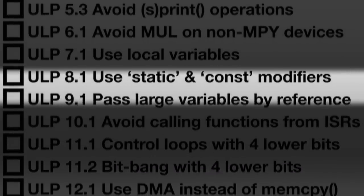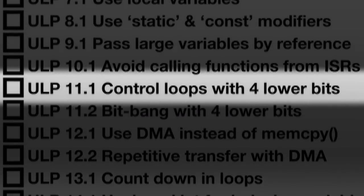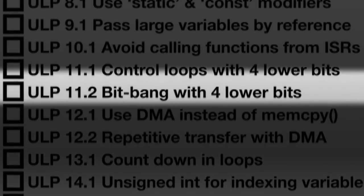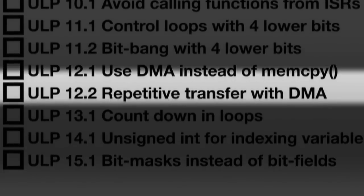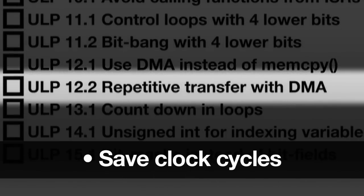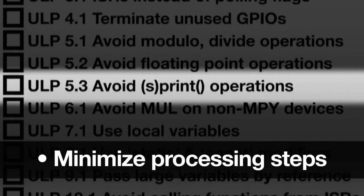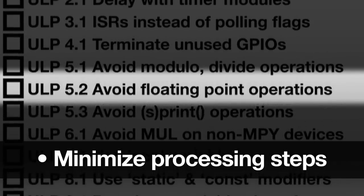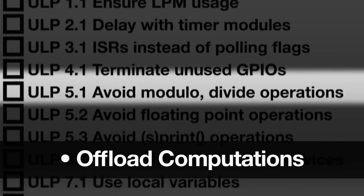Other rules show how to architect your code to perform tasks efficiently in order to return to low power modes quickly. Additionally, these rules show you how to save clock cycles with CPU tricks, minimizing processing steps with the integrated peripherals, or to offload computations to minimize active time.